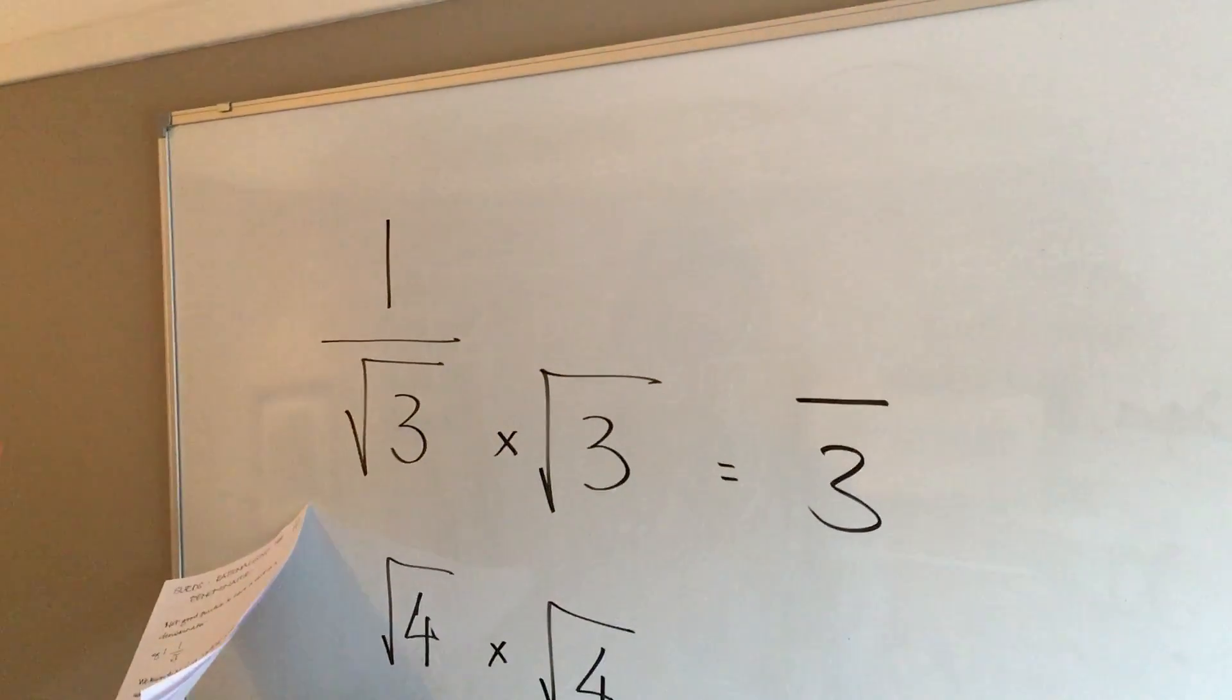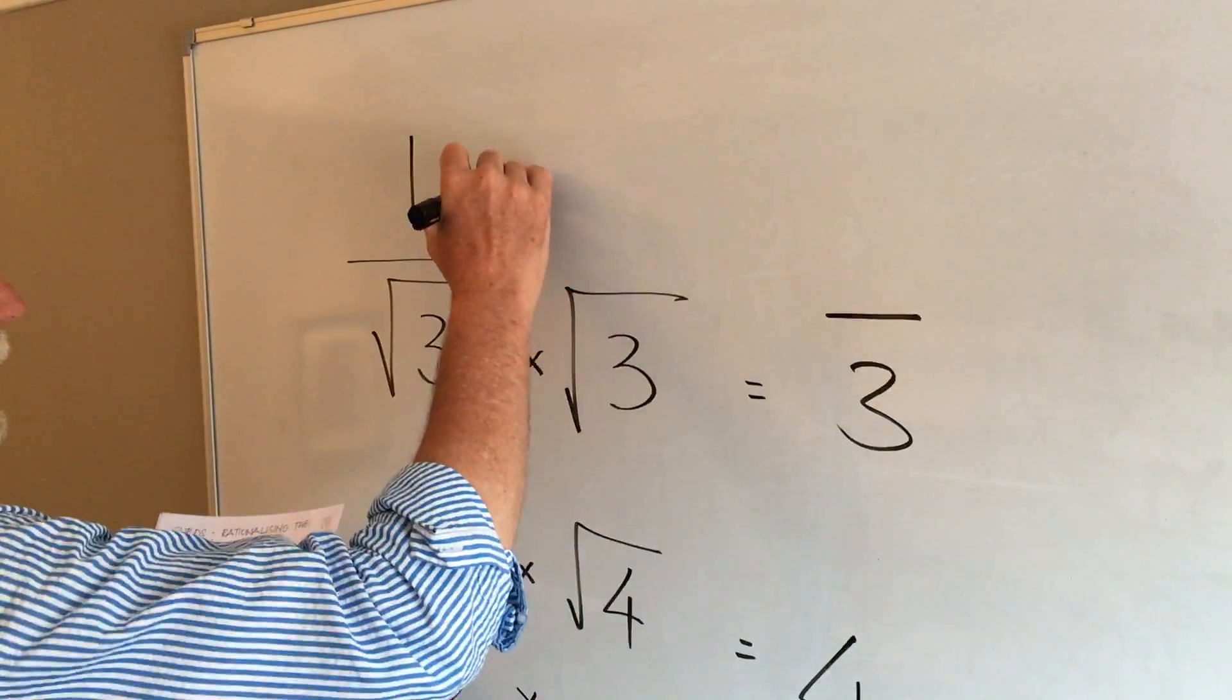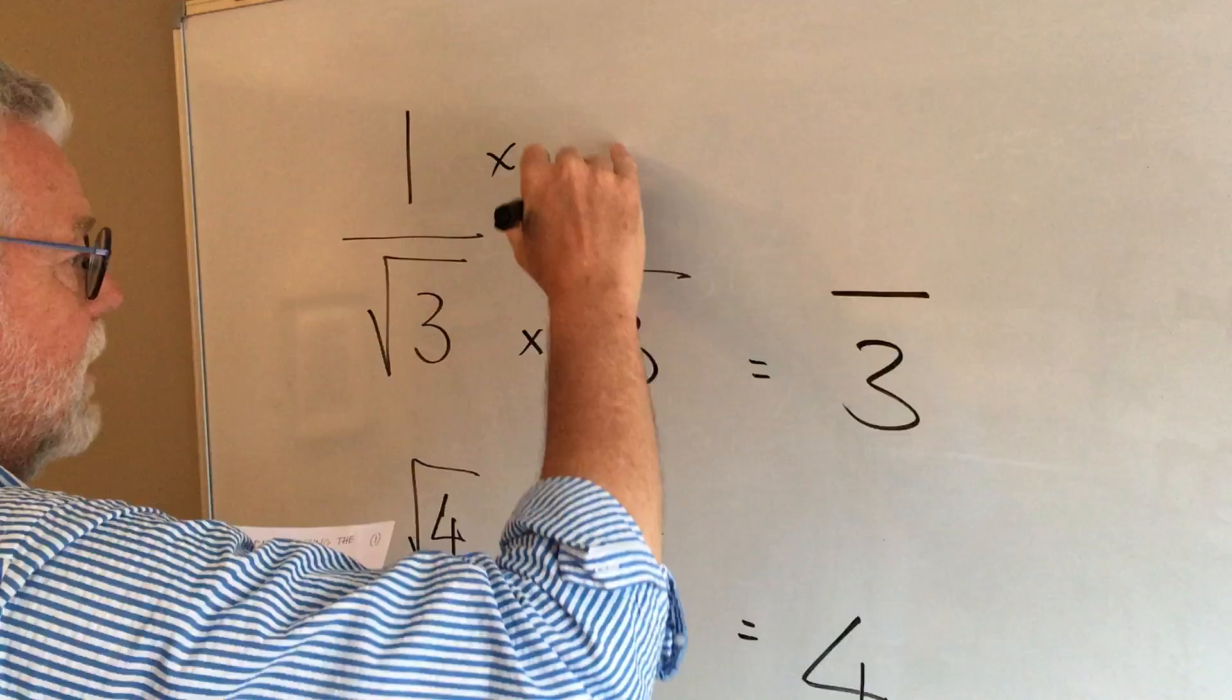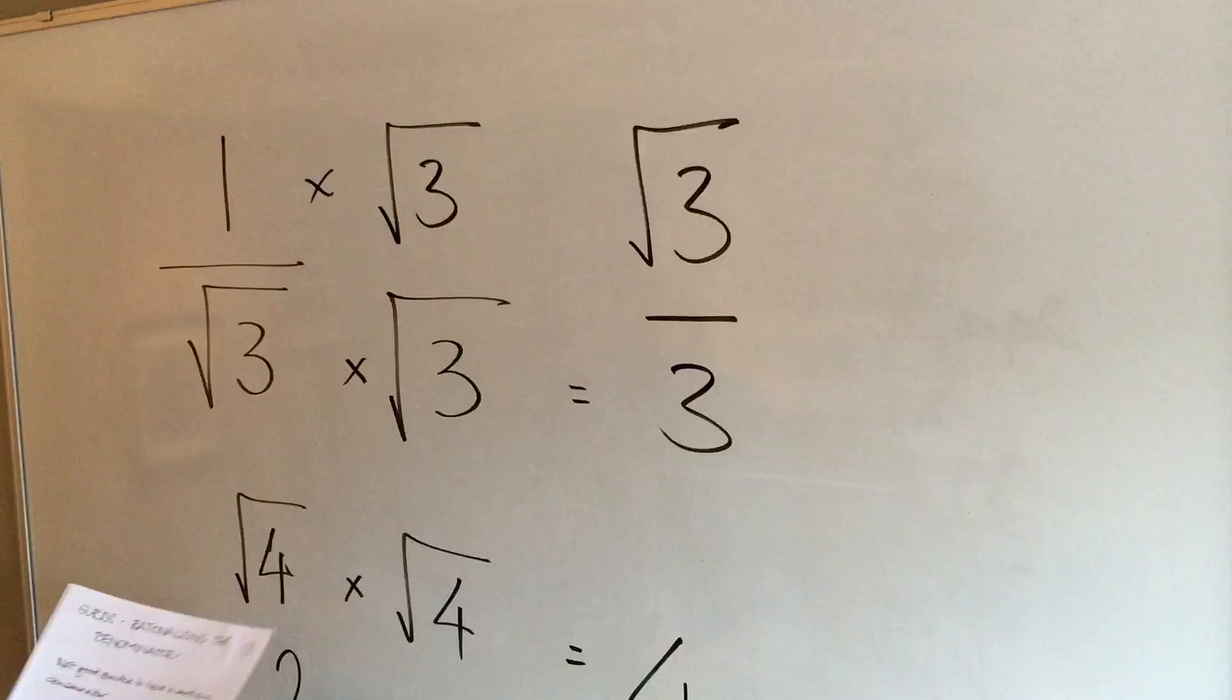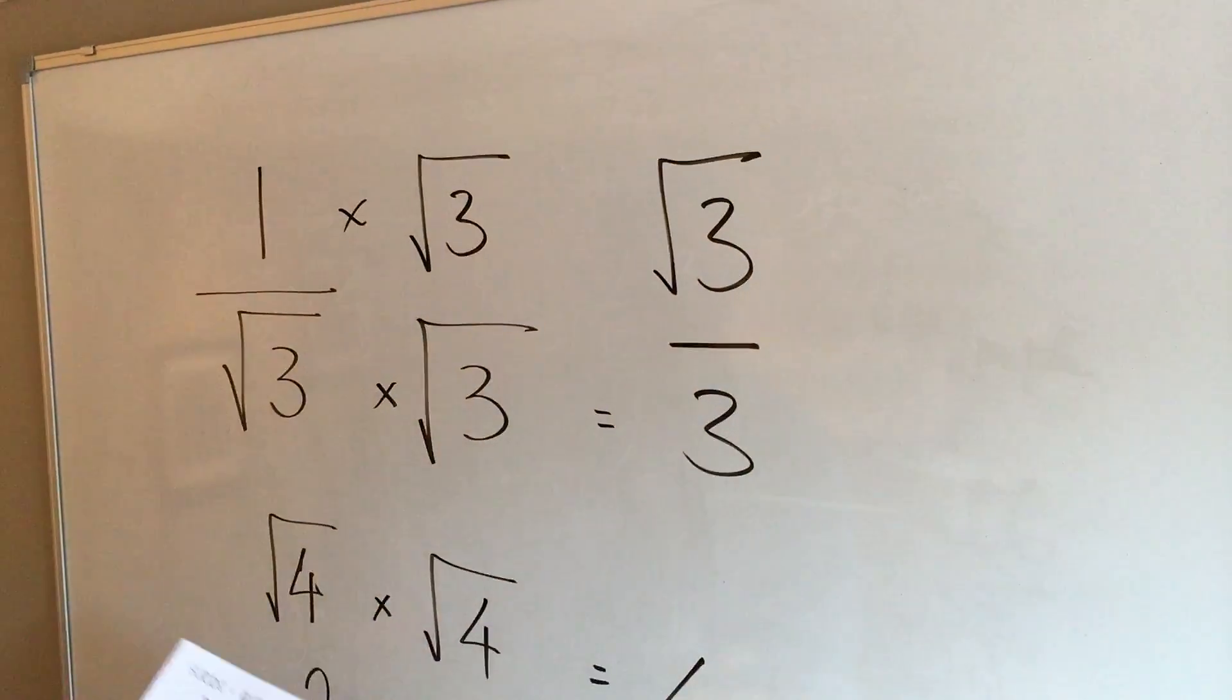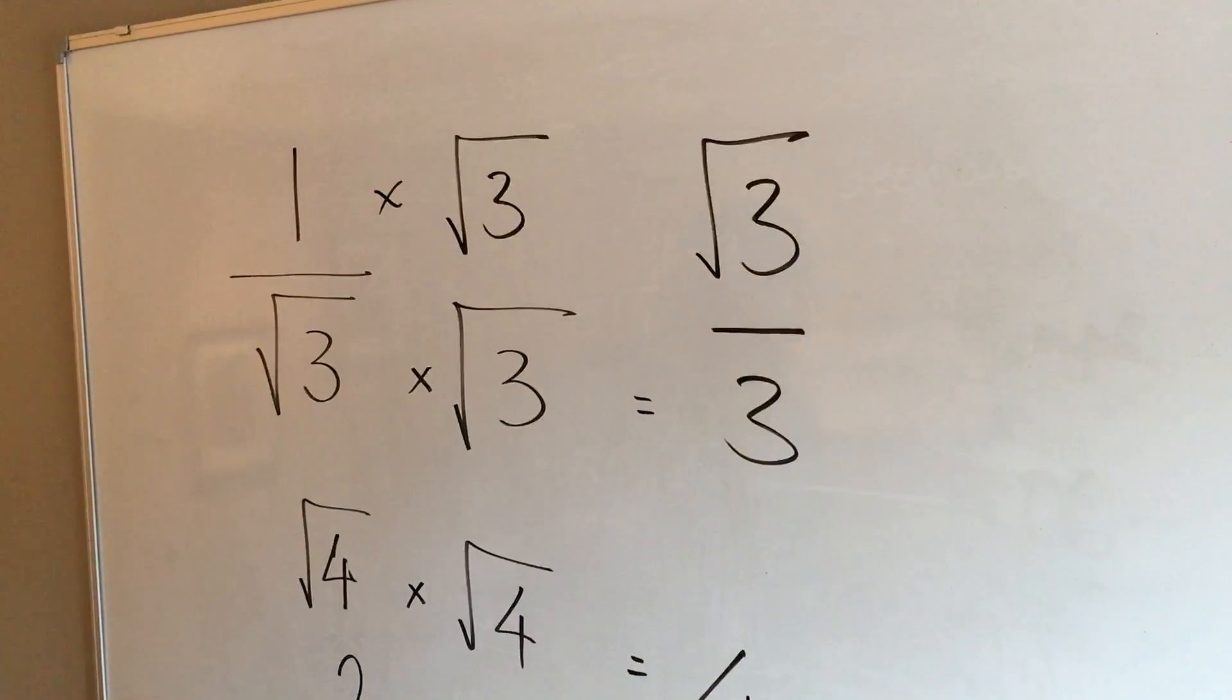So we get rid of the SURD as our denominator, but knowing our use of fractions, whatever we do to the bottom we have to do to the top. So we've now got to multiply that by root 3. We end up with the answer of root 3 over 3, and now that means we've actually rationalized that denominator.